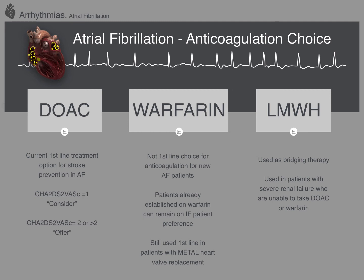The other form of anticoagulation you'll occasionally see, especially in inpatients with atrial fibrillation, is low molecular weight heparin. This is sometimes used as bridging therapy — it can be relatively easy to start and stop. If somebody is having surgery or a procedure with a bleeding risk where we want to stop anticoagulation briefly, we sometimes bridge them with low molecular weight heparin. We also use it in patients with severe renal failure — a creatinine clearance of less than 15. Those patients can't take DOACs, and in some circumstances we would also wish to avoid warfarin, so sometimes those patients are managed on long-term low molecular weight heparin.